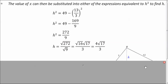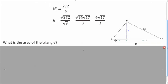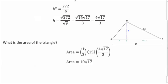And now we can plug into our formula for area. So we have the height now as this number. So one-half the base times the height. We simplify this and we end up with 10 times the square root of 17. Because 4 divided by 2 is 2, 15 divided by 3 is 5, 2 times 5 is 10.